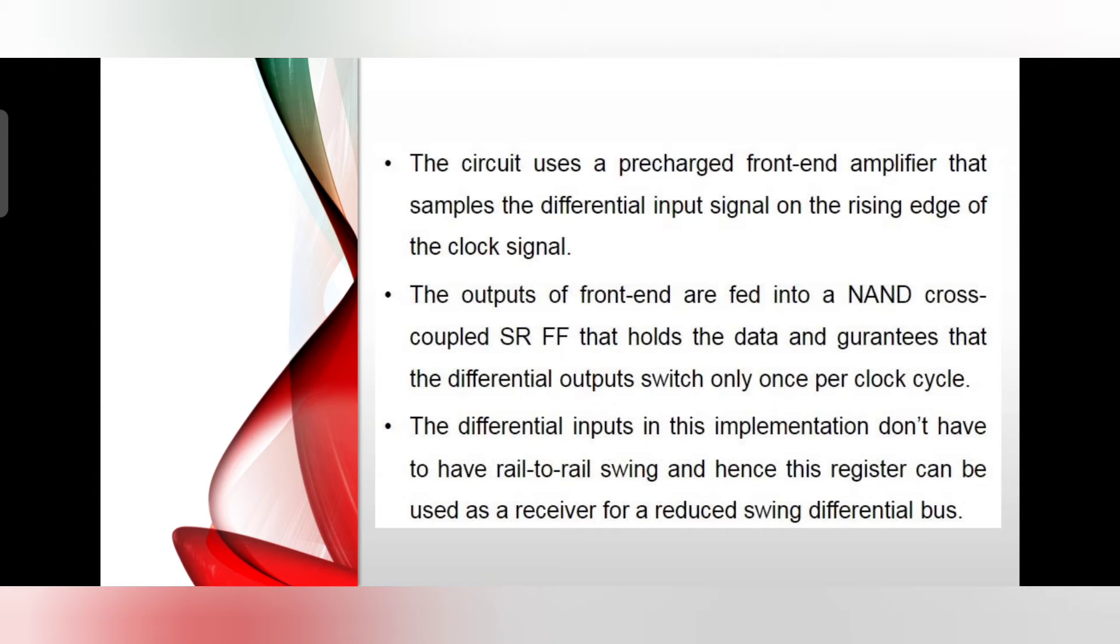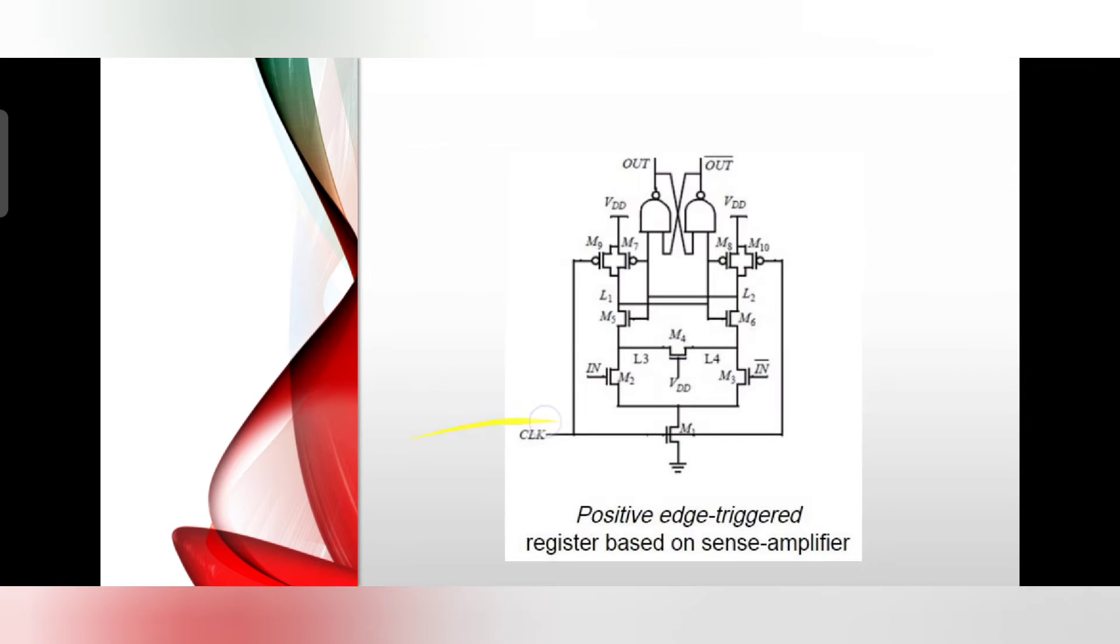During the low phase of the clock, PMOS transistors M7 and M8 are turned off and the NAND flip-flop holds its previous state. Transistor M1 is similar to the evaluate switch in dynamic circuits and is turned off, ensuring that the differential inputs do not affect the output during the low phase of the clock.